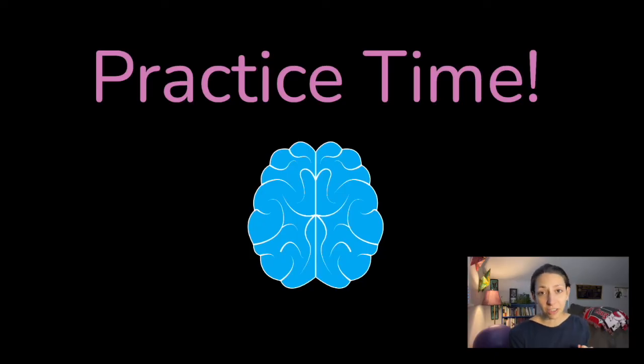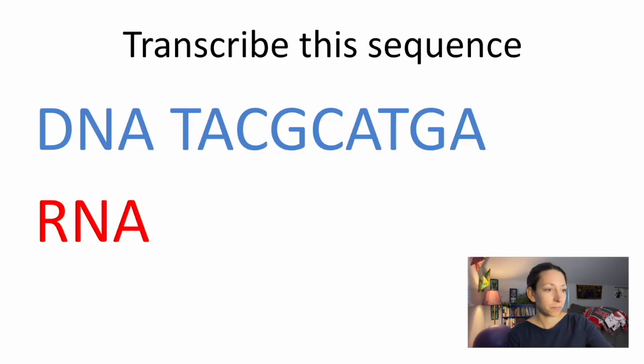Let's do some more practice. Make sure you have that scratch paper. And remember, if you need access to a codon chart, there's a link in the description below with both the circle versions and the version in the table. I want you to transcribe this sequence. Remember, we're going from DNA to RNA here. You can pause this video and go through it at your own pace. Do whatever you need to do to make sure you get that practice in.